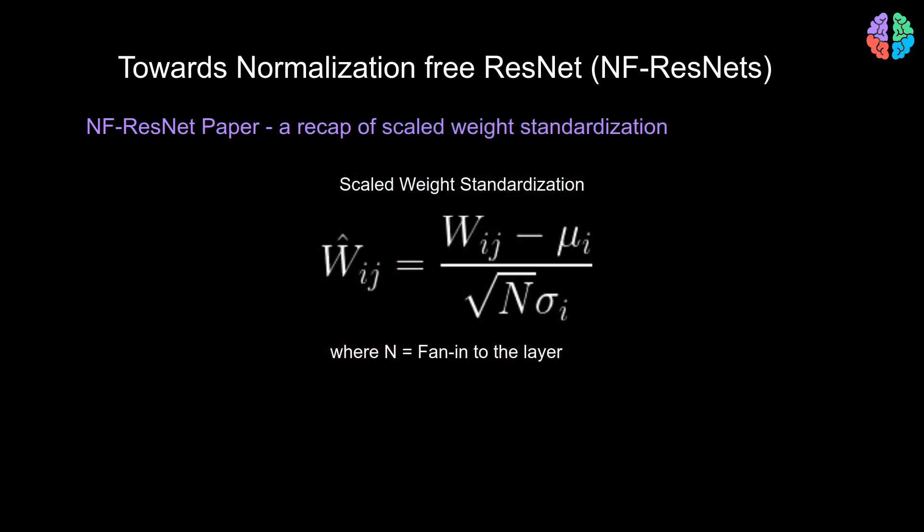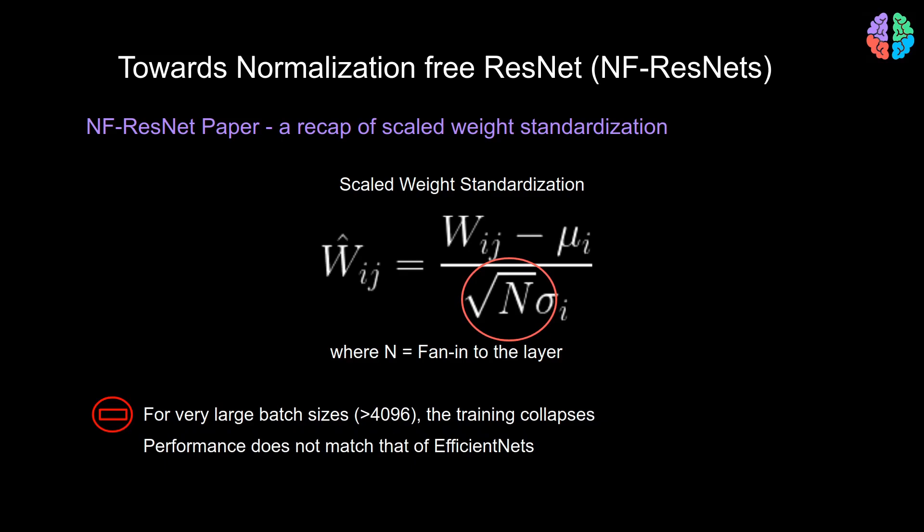Scaled weight standardization is when we introduce a scaling parameter n and you modify the equation of weight standardization by dividing by the square root of n. Here n is the number of inputs that the layer can accept. By introducing the scaling factor, NF-ResNet was able to do a decent job without batch norm layers. But somehow, the training collapses when the batch size is very large, say 4,000 or more. Also, the performance was not as good as the state-of-the-art batch norm-based networks like EfficientNet.